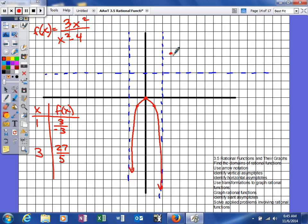So 1, 2, 3, 4, 5 and 2/5 would be somewhere there. Now again, symmetry is going to help us out since we have y-axis symmetry. 1, 2, 3 and then 1, 2, 3, 4, 5 and 2/5. So that point also has to exist.